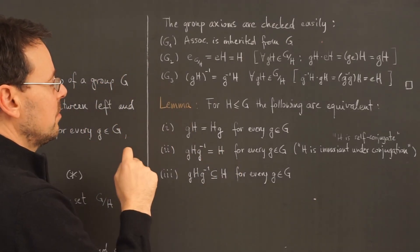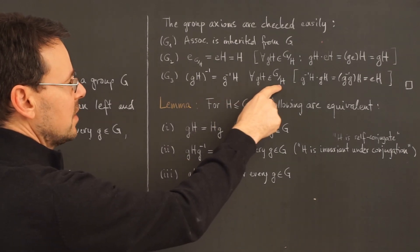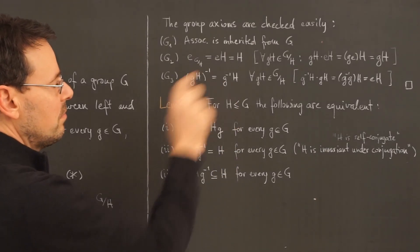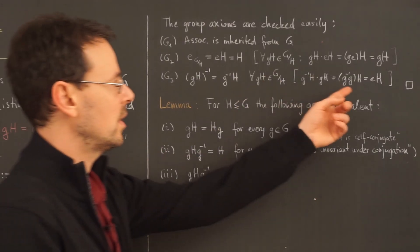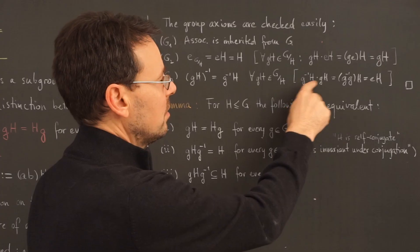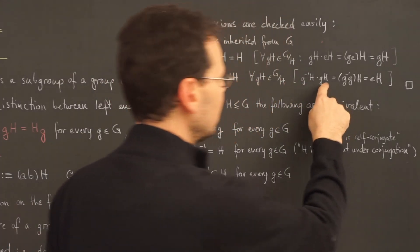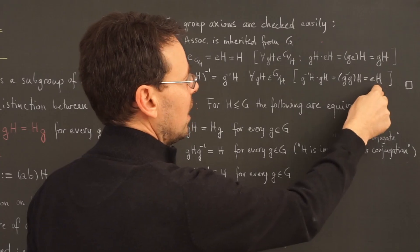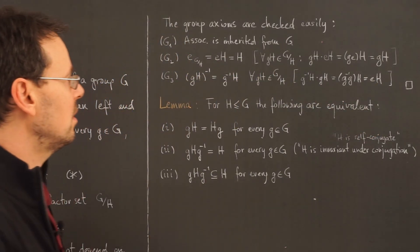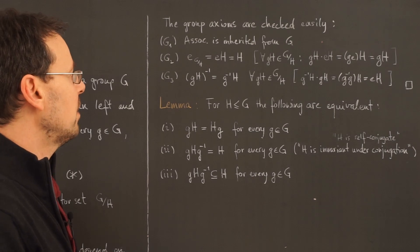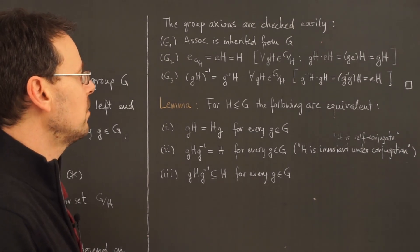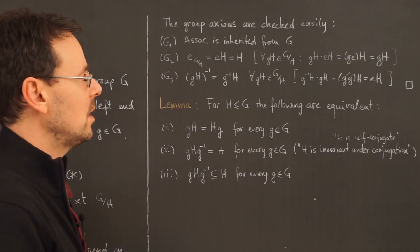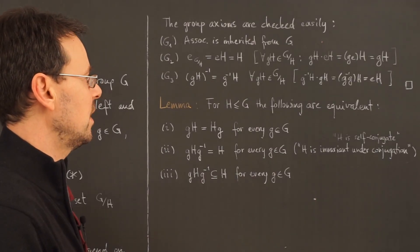Last, group axiom three: every element of the factor set needs an inverse. The obvious candidate for the inverse of gH is the coset of g inverse, g⁻¹H. By coset multiplication, gH times g⁻¹H gives g·g⁻¹ = e, the identity, yielding the neutral element eH — and the same in the other direction.